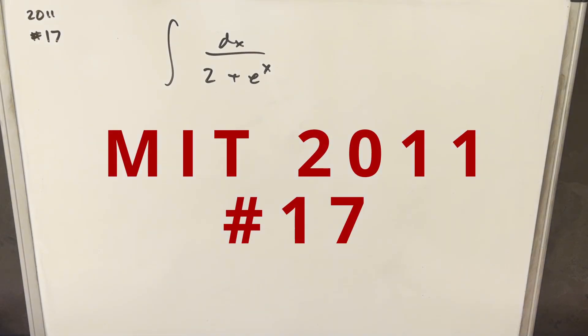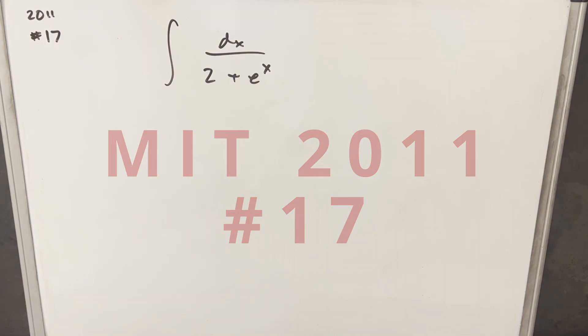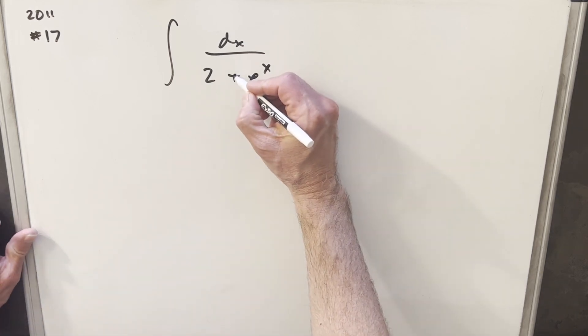Okay, we've got another integral here from MIT 2011, problem 17. We have the integral of dx over 2 plus e^x. I think this one's going to go really fast, so let's fix this plus sign.